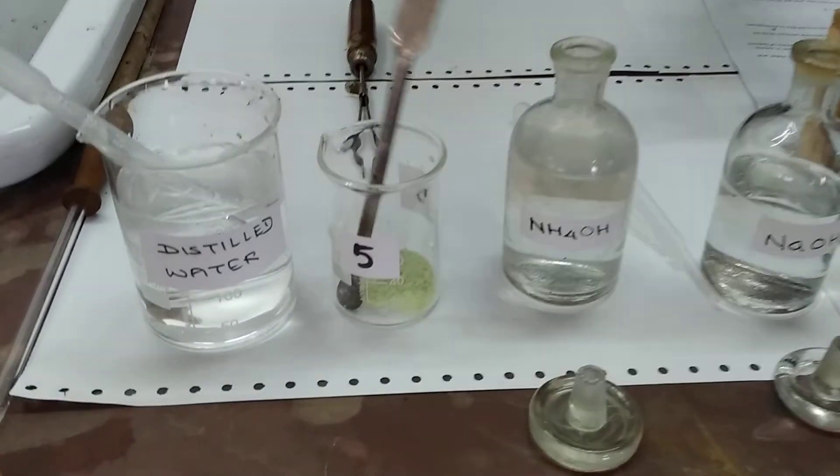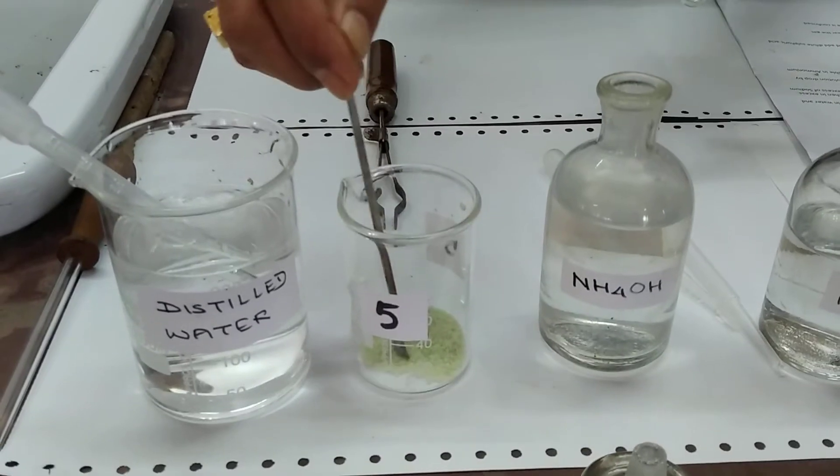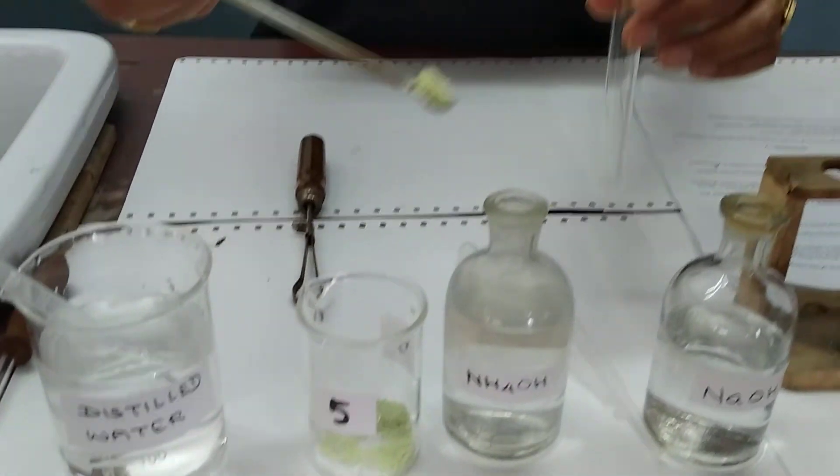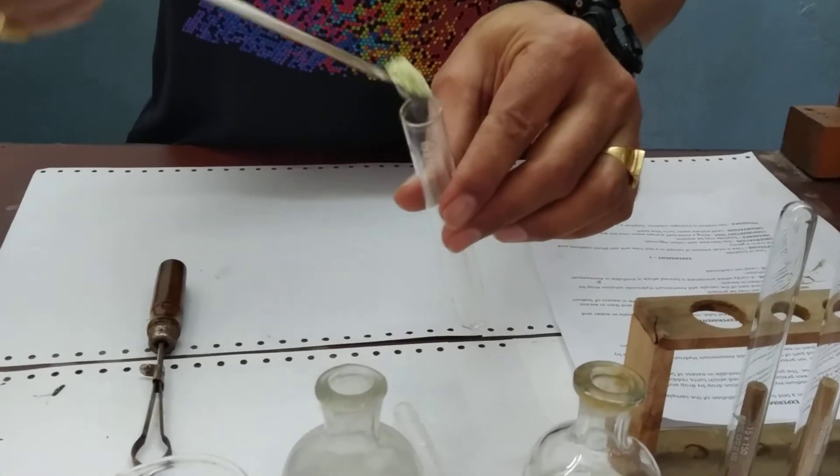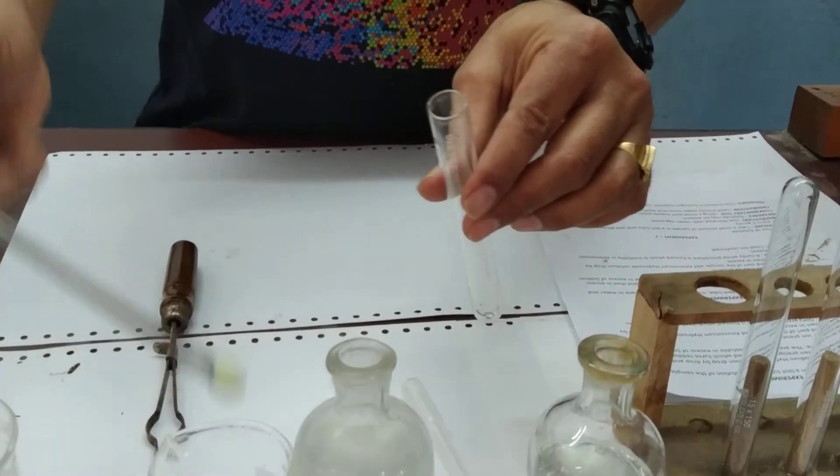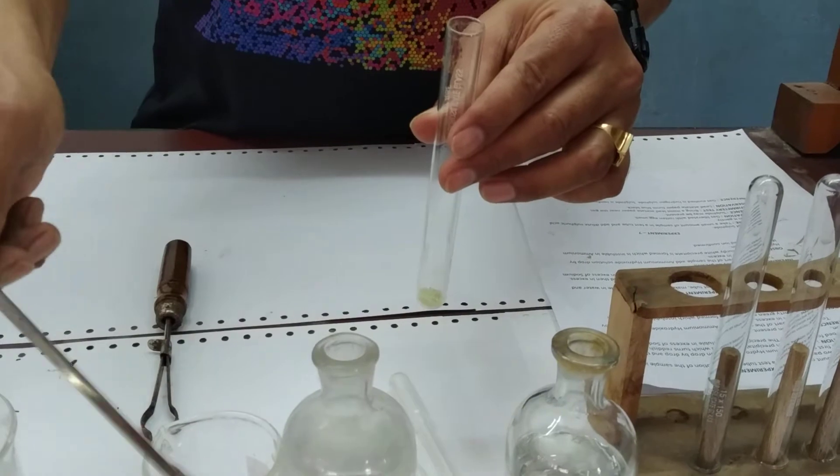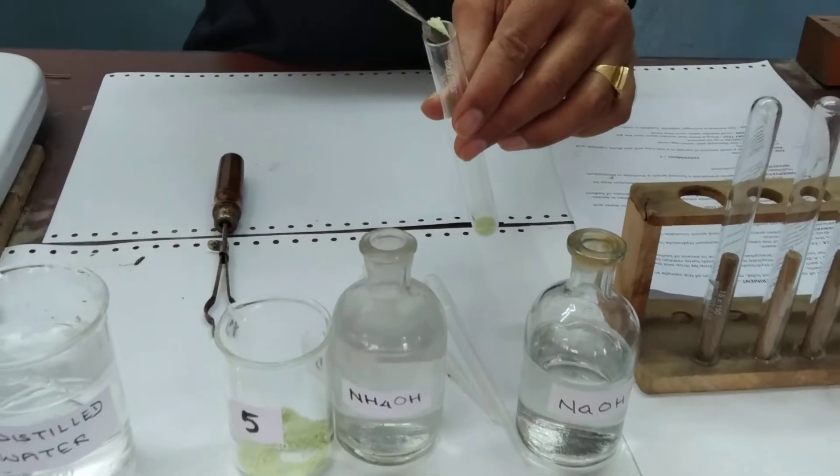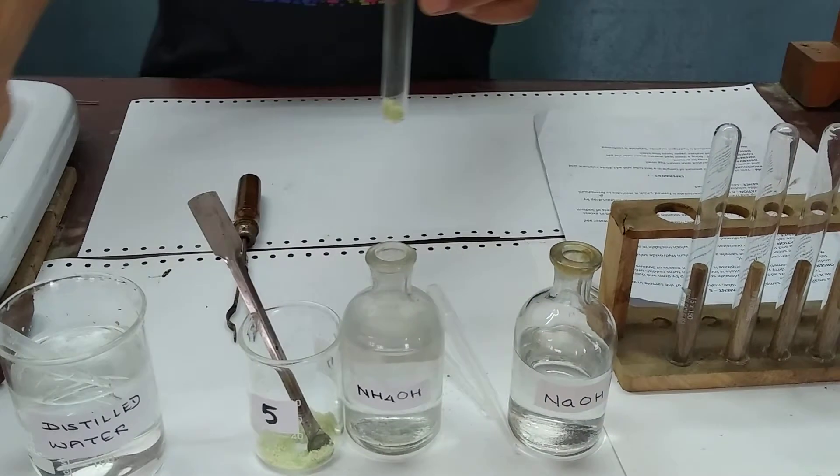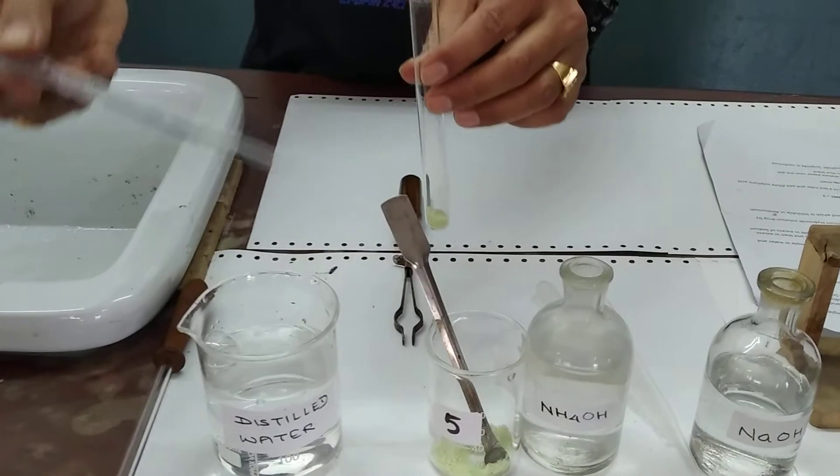This is experiment number five. The fifth sample is given to us and we transfer this sample into the test tube. Then we add distilled water to it.